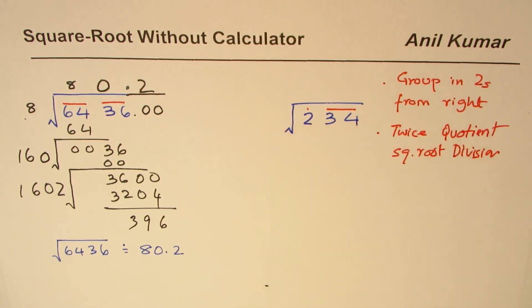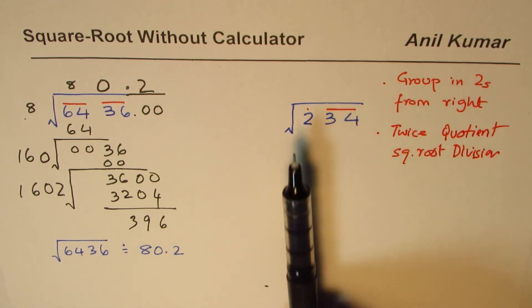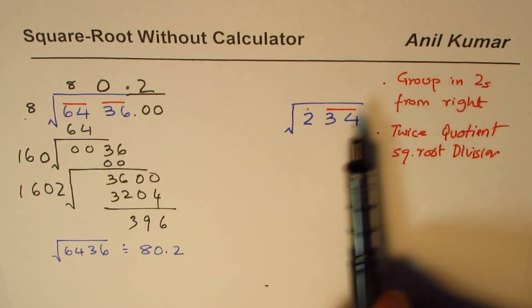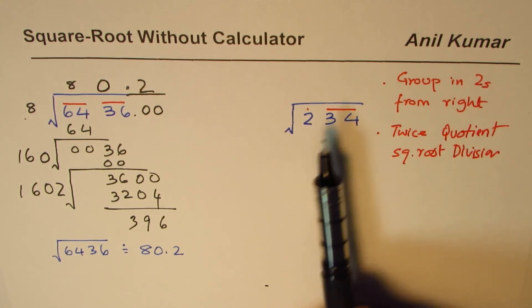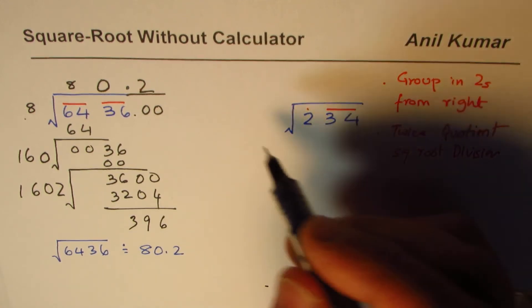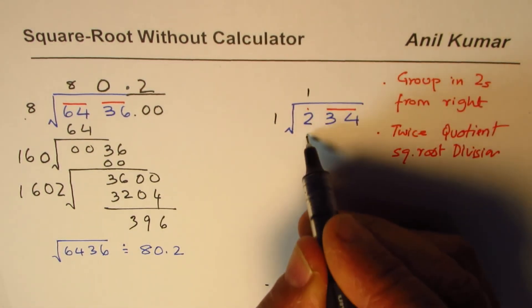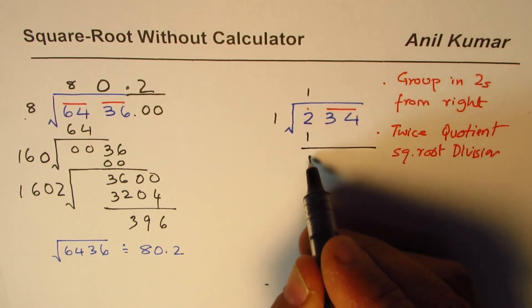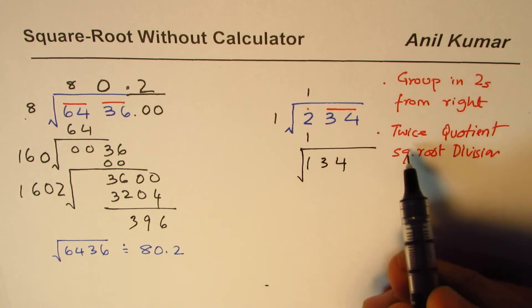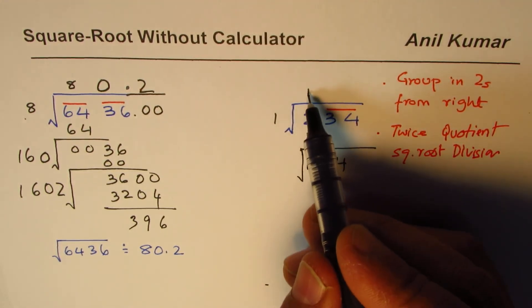Let's take the next example which has odd number of digits. We've already learned that we have to group from the right side, so 34 is the first group, we're left with a single digit number 2. So we could do 1 times 1 which is 1, remainder is 1, bring down 34.